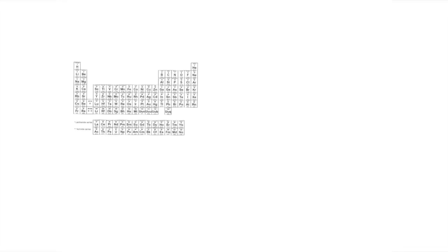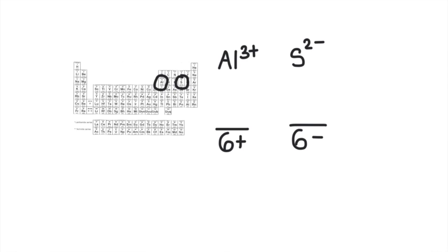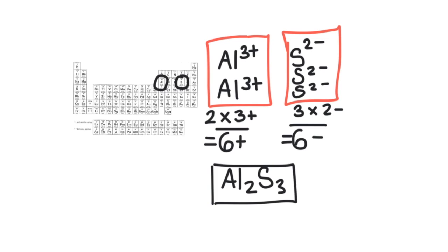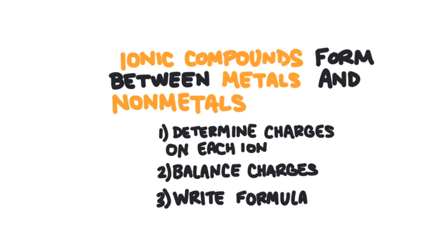When aluminum and sulfur react, the charge on aluminum is 3 plus and the charge on sulfur is 2 minus. If the charges don't initially balance, I can add more of each element so that the total positive charge equals the total negative charge. I just have to find a common multiple between 2 and 3, which is 6. To get the positive side to equal 6, I need 2 aluminums: 2 times 3 plus equals 6 plus. Then I need 3 sulfur ions: 2 minus times 3 gives 6 minus. The formula is Al2S3. Ionic bonds form between metals on the left side of the periodic table and nonmetals on the right. To determine the formula: first determine the charges, second balance the charges by adding more of each element, and third write the formula using subscripts.